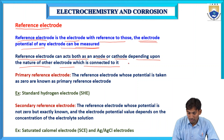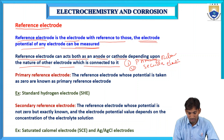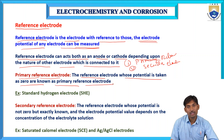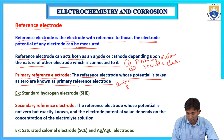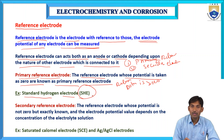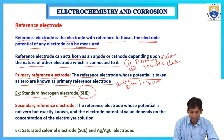Reference electrodes are classified into two types: primary reference electrode and secondary reference electrode. The primary reference electrode is one whose potential is taken as zero. The example for primary reference electrode is the standard hydrogen electrode, abbreviated as SHE.